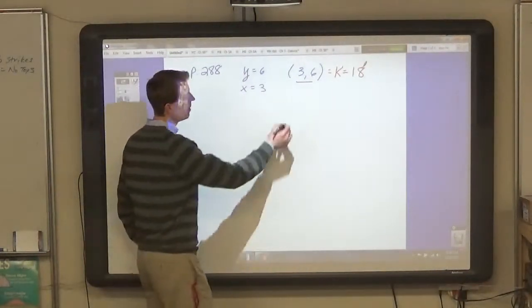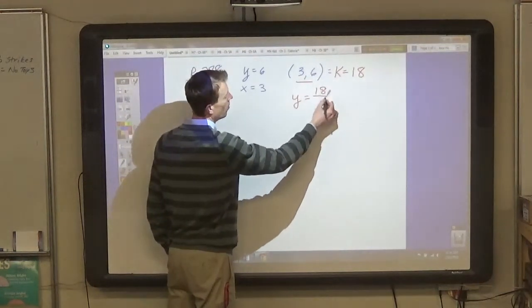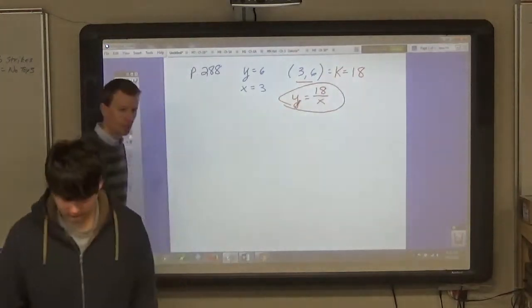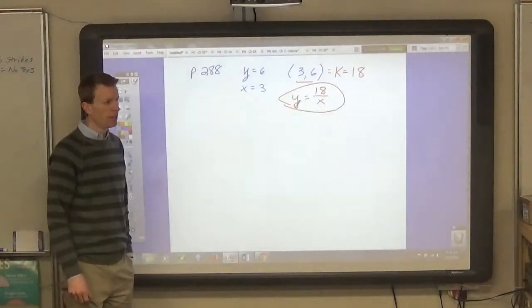And then write the equation using y and x. Y equals 18 over x. It's that simple. Does that make sense?